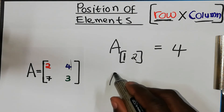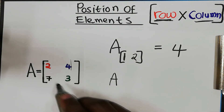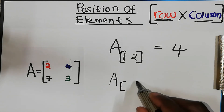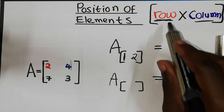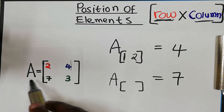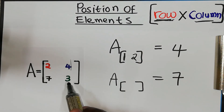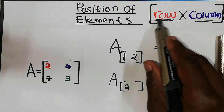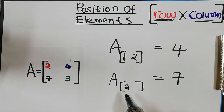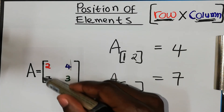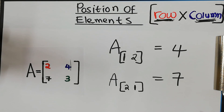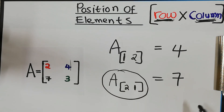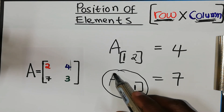Let's do the same for element seven. Which row is element seven in? It's on the second row. And which column is it in? It's in the first column, so that is one. This tells you the position of an element for any matrix.